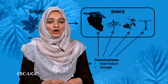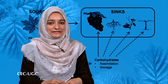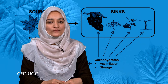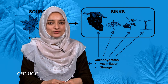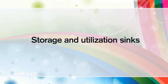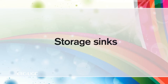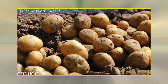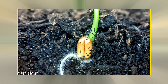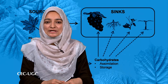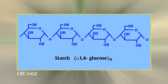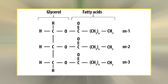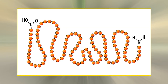Sink organs are photosynthetically inactive and import photoassimilates. Sinks may be further classified into storage and utilization sinks. Storage sinks include organs like roots, tubers, and seeds, wherein imported assimilates are deposited in the form of storage compounds like starch, fatty acids, proteins, or sucrose.